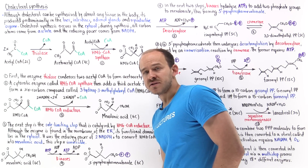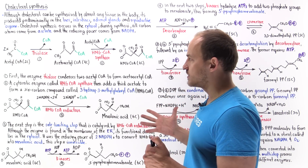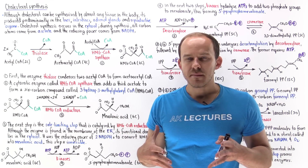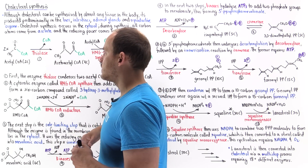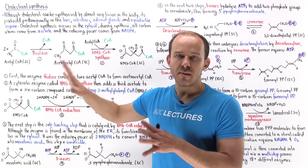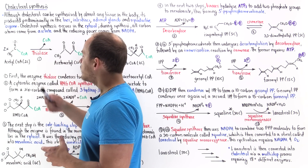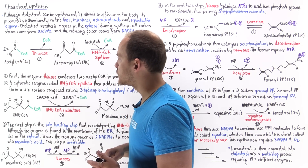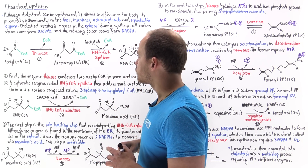Cholesterol synthesis is a very complicated process with many individual reaction steps, so here we're only going to focus on the important reactions. The first step: you take two acetyl coenzyme A molecules and combine them. The enzyme that catalyzes this is thiolase, which condenses two acetyl coenzyme A molecules — each containing two carbon atoms — to form a four-carbon molecule, acetoacetyl coenzyme A.